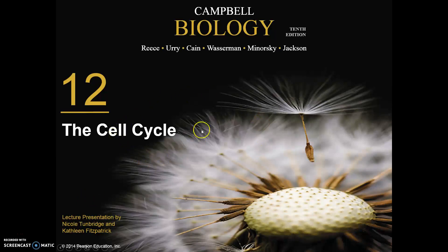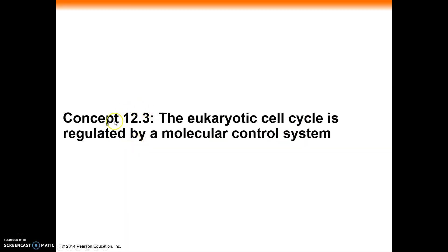Welcome back to our final section of the cell cycle. Looking at concept 12.3, the eukaryotic cell cycle is regulated by a molecular control system. We're not going to spend any time looking at the exact nature of this molecular control system — we'll just talk at a high level about how this overall system works and why it's there.